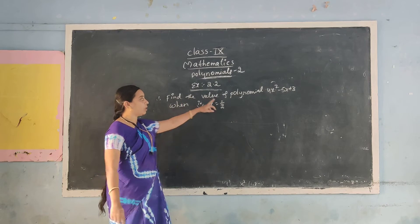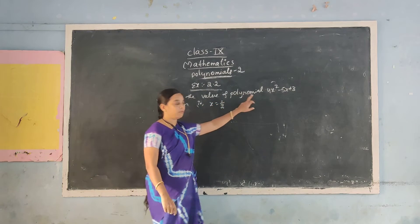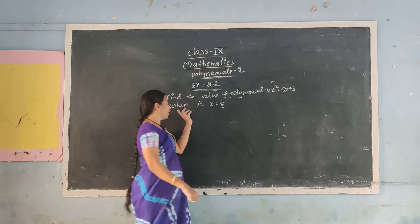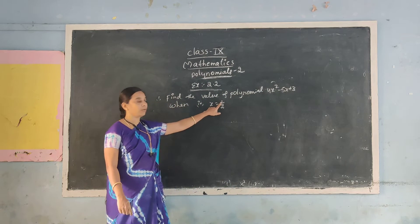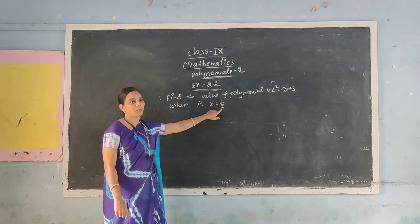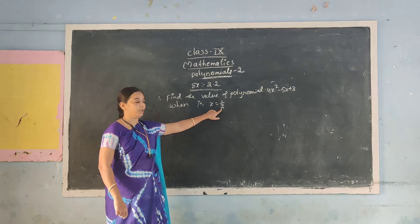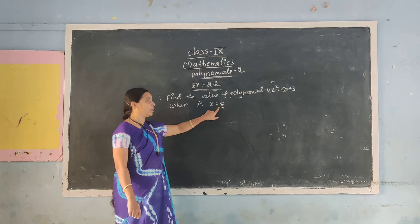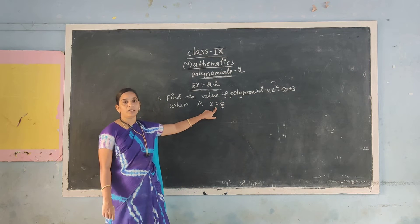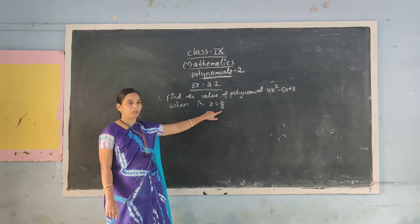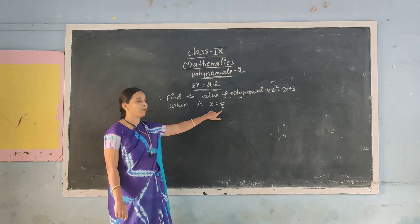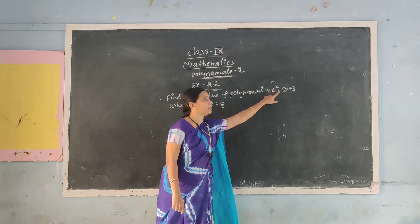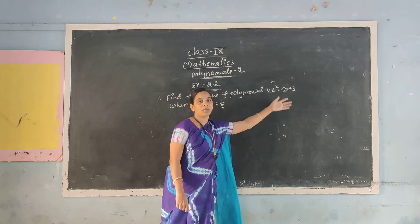Find the value of polynomial 4x squared minus 5x plus 3 when x is equal to 1 by 2. So now find the value of this expression. The x value is already given — it is 1 by 2. So this 1 by 2 is substituted in the places of x and you will get the answer.